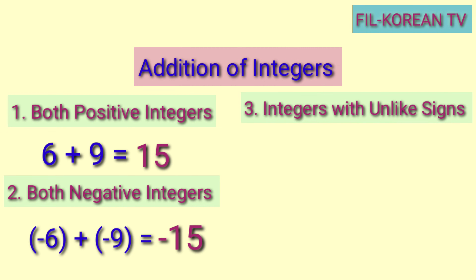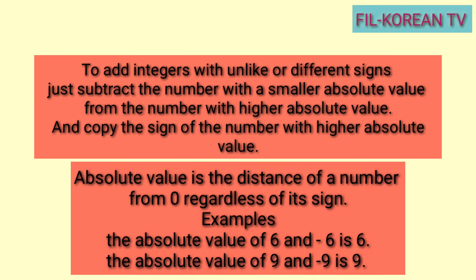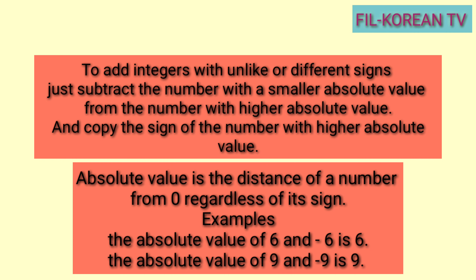This time, we will add integers with unlike or different signs. Let's get the sum of positive 6 plus negative 9. To add integers with unlike or different signs, just subtract the number with a smaller absolute value from the number with higher absolute value, and copy the sign of the number with higher absolute value. When we say absolute value, it is the distance of a number from 0, regardless of its sign. Examples: the absolute value of 6 and negative 6 is 6; the absolute value of 9 and negative 9 is 9.